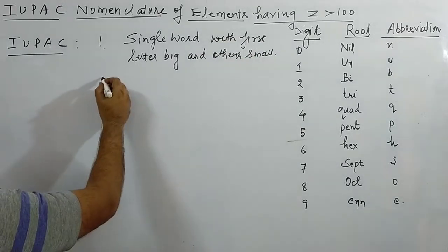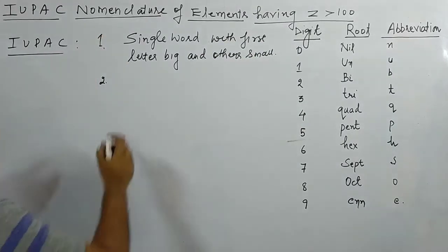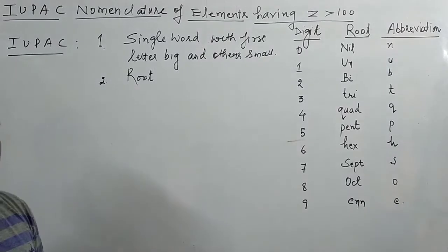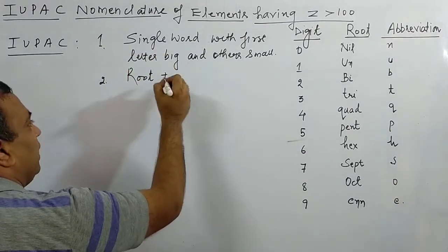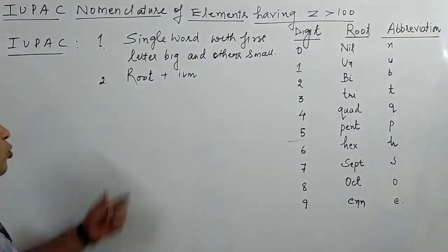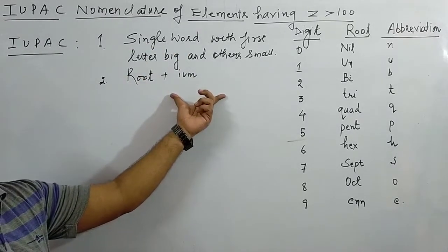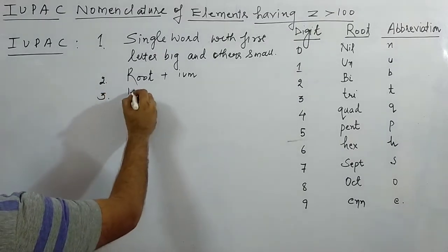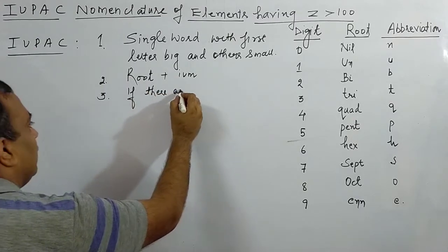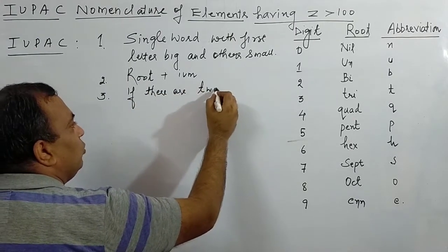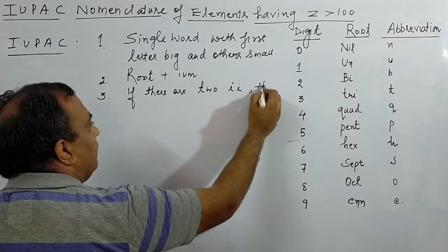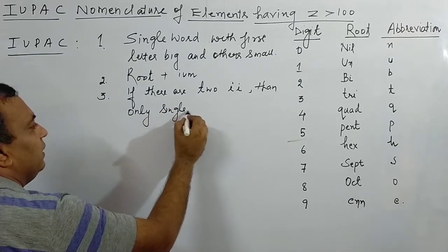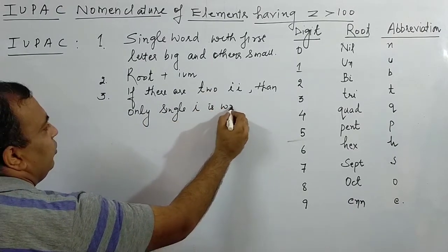Secondly, in this IUPAC name, first you have to write the root, then add IUM at the end. So root plus IUM — you write the root and at the end indicate IUM. The third and last rule: if there are two consecutive I's, only a single I is written.